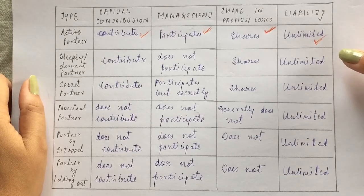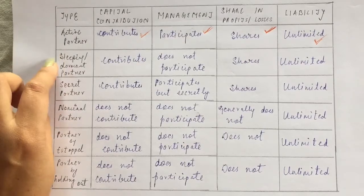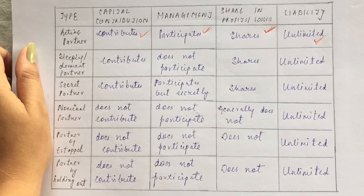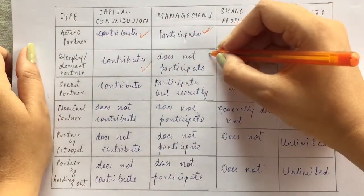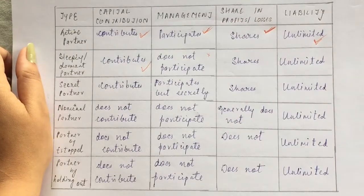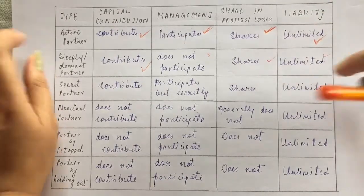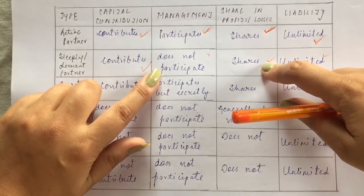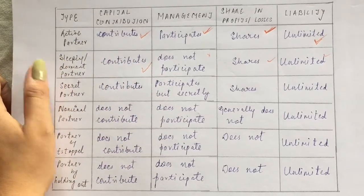The second type of partner is the sleeping or dormant partner. As the name suggests, this partner is not active — they are inactive. They do make a capital contribution, but they do not participate in management or decision making. They do have a share of the profits or losses. This is called a sleeping or dormant partner.